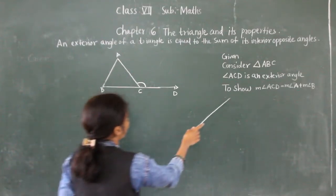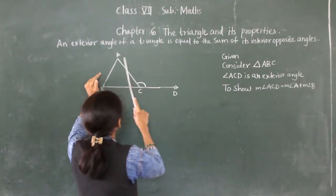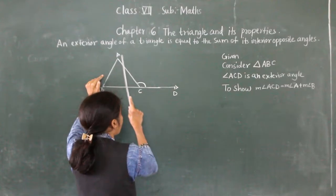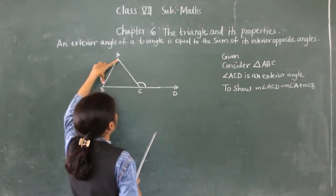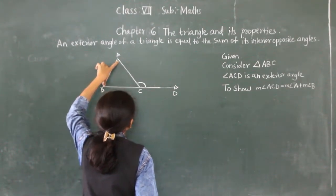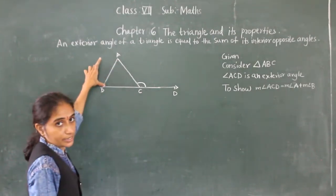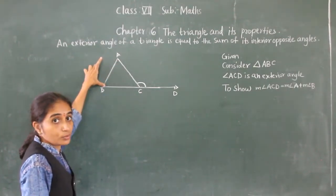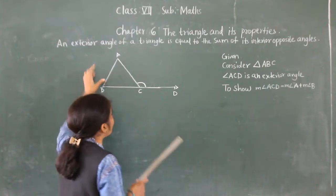So what we have to show: angle ACD is equal to the sum of its interior opposite angles, which are angle A plus angle B. This is what we have to prove.